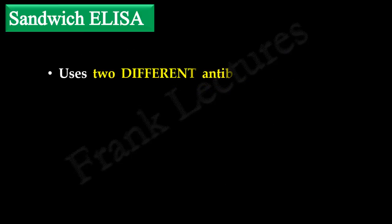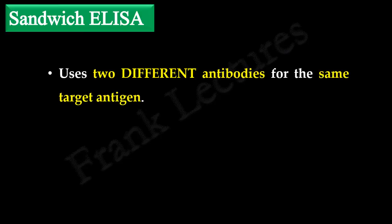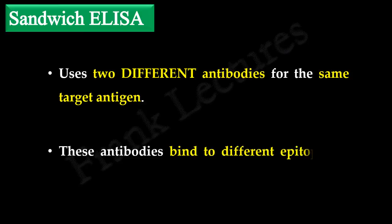Sandwich ELISA uses two different antibodies for the same target antigen. An important point is that these antibodies recognize and bind to different epitopes on the target antigen.